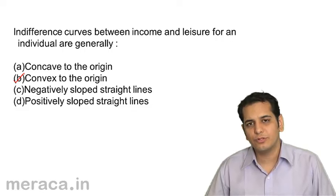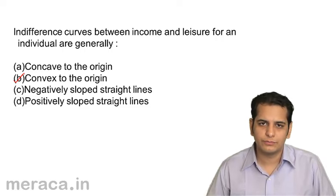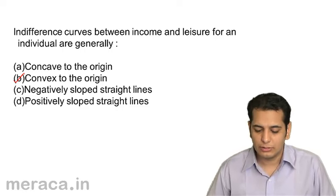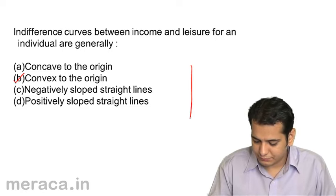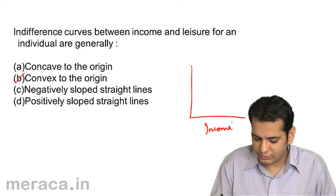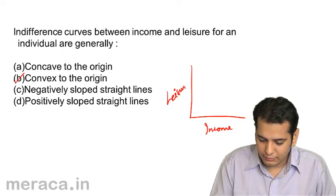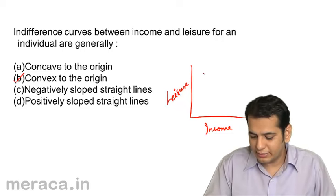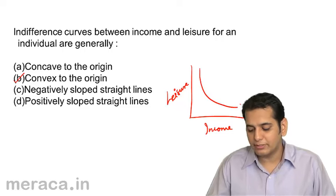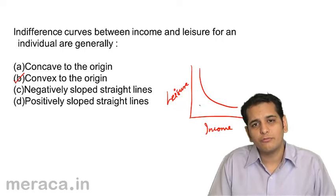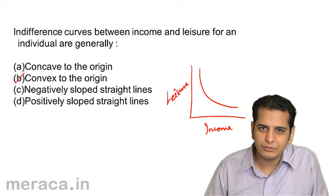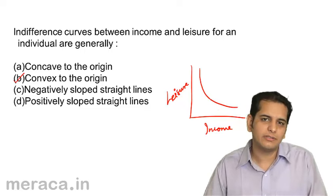It is one of the properties of the indifference curve that indifference curves are convex to the origin. They always slope downward from left to right and are generally convex to the origin. In this case, we take income on the x-axis and leisure on the y-axis. Since you have to maintain the same level of satisfaction, the indifference curve is convex to the origin because income increases satisfaction and at the same time leisure also increases satisfaction.